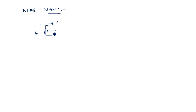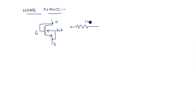The substrate terminal and the source terminal — source and substrate must be connected together. This NMOS transistor configured with shorted drain and gate exhibits a resistance of 100 kilo ohms between drain and source.